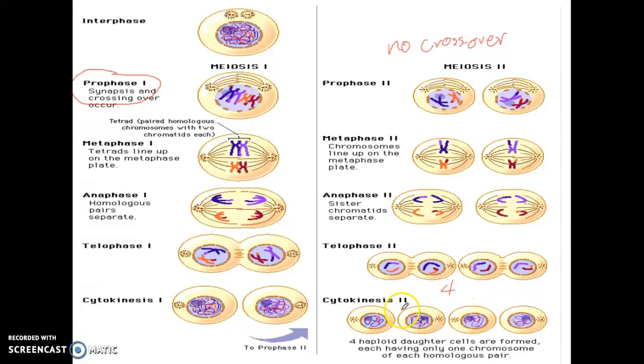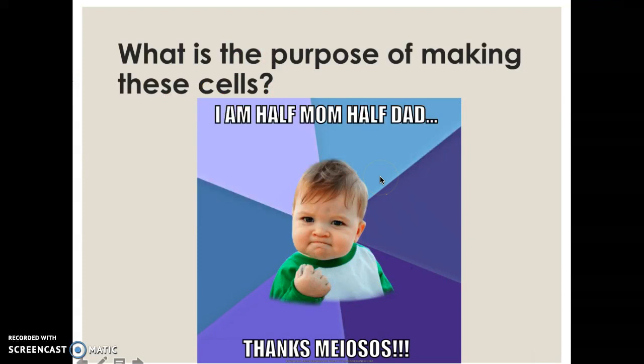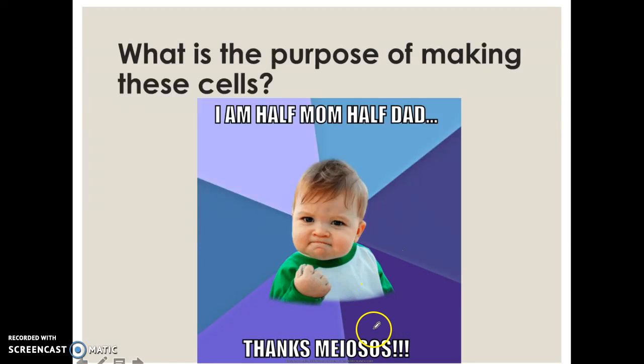Why is meiosis so important? The main purpose of meiosis is to ensure genetic variation, which is important for diversity. Due to crossing over, different genes are shared and you end up with variation. There is a meme here that says 'I am half mom and half dad — thanks, meiosis.' Make sure you do not spell meiosis the way the baby in the meme did — make sure you spell it with an 'I' right there.